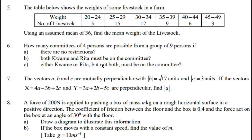Number 7: The vectors a, b, and c are mutually perpendicular with the magnitude of b equal to root 17 units, magnitude of c equal to 3 units. If the vector x equals 4a minus 3b plus 2c and y equals 3a plus 2b minus 5c are perpendicular, find the magnitude of vector a.